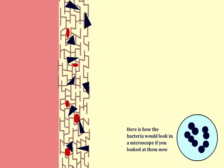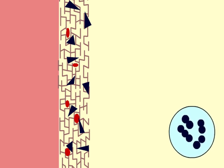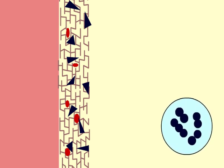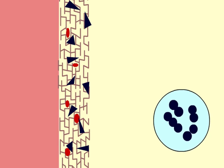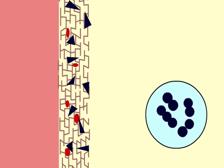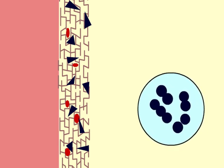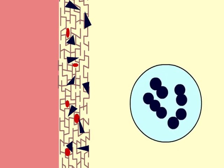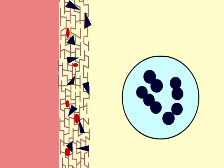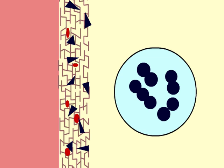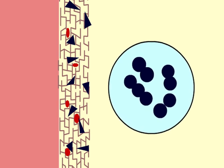So, by virtue of the complex, multi-layer structure of the gram-positive cell wall, these bacteria appear dark blue or black in the microscope after this staining procedure.